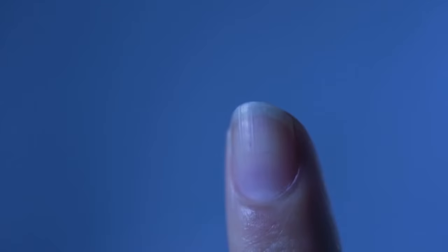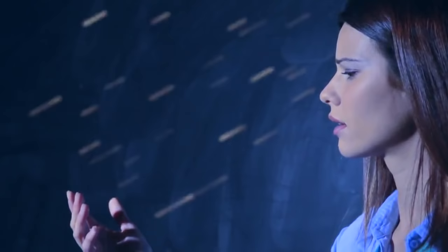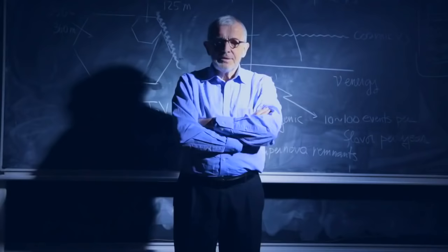The critical difference between neutrinos and light is neutrinos go through walls, light doesn't. And so the inference is that they may reach us from places in the Universe that we have never seen before. So, we build IceCube to do astronomy with neutrinos.